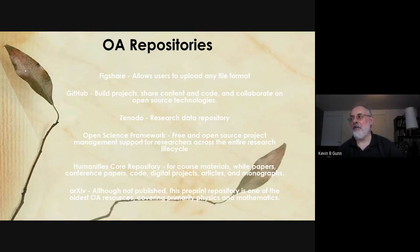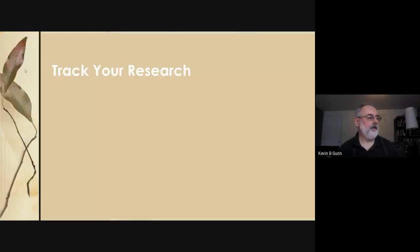For those strictly in the humanities, there's the Humanities Commons repository, covering course materials, white papers, conference papers, code, digital projects, articles, and monographs. And arXiv is one of the oldest OA preprint resources, covering primary sciences, physics, and mathematics. That brings us to the last area: tracking your research.